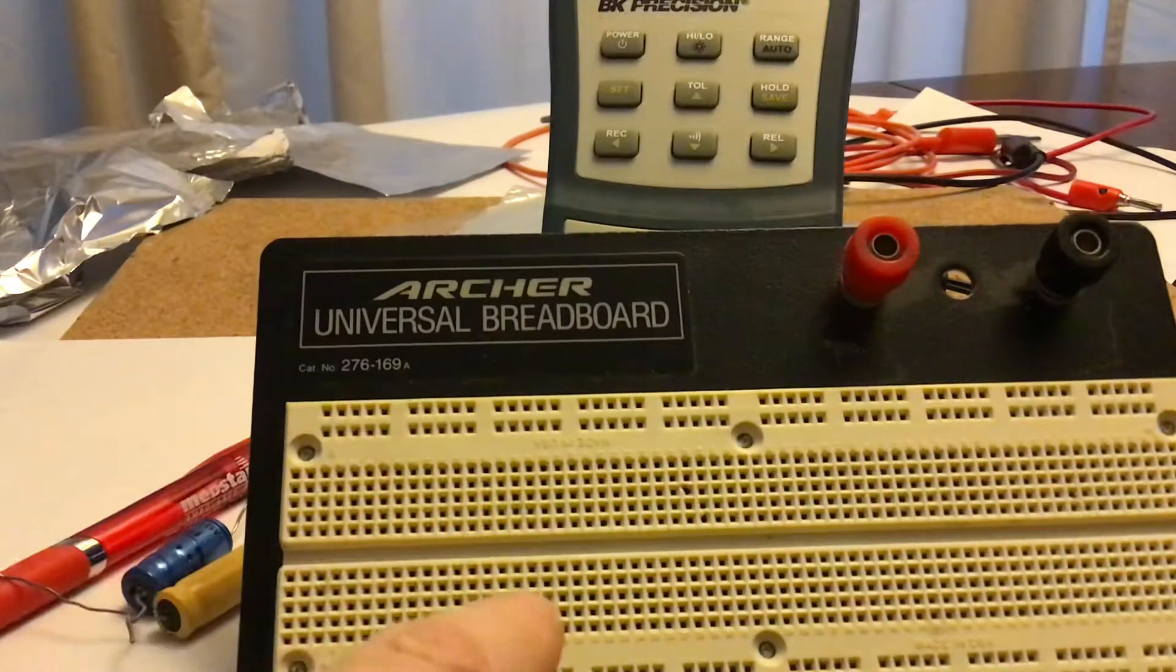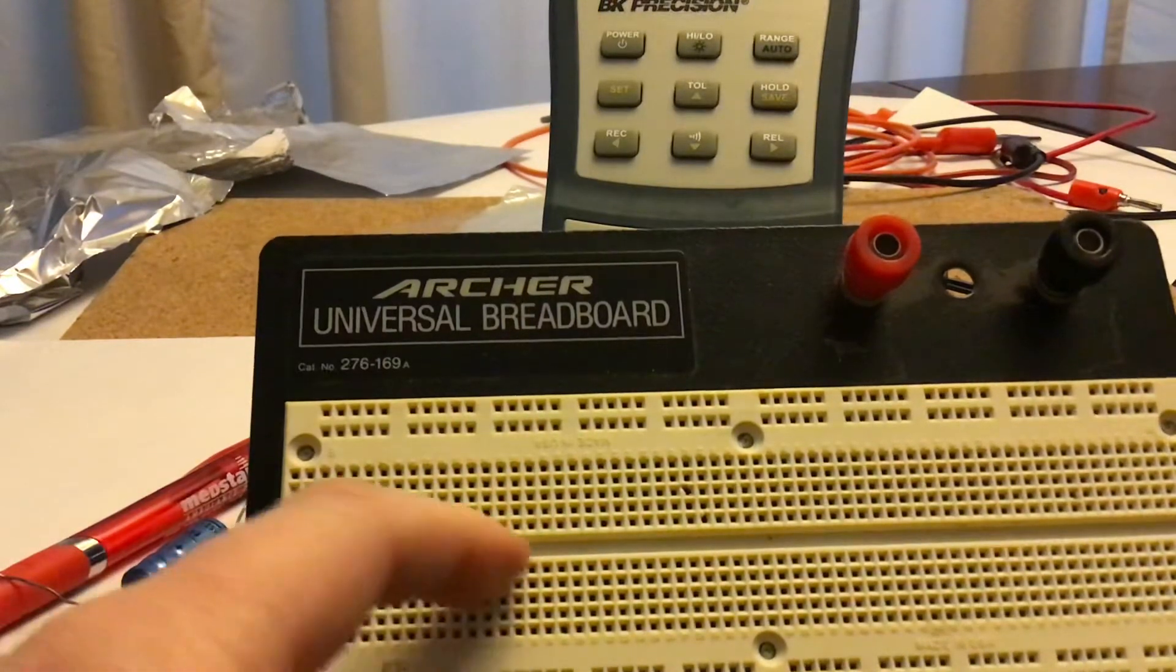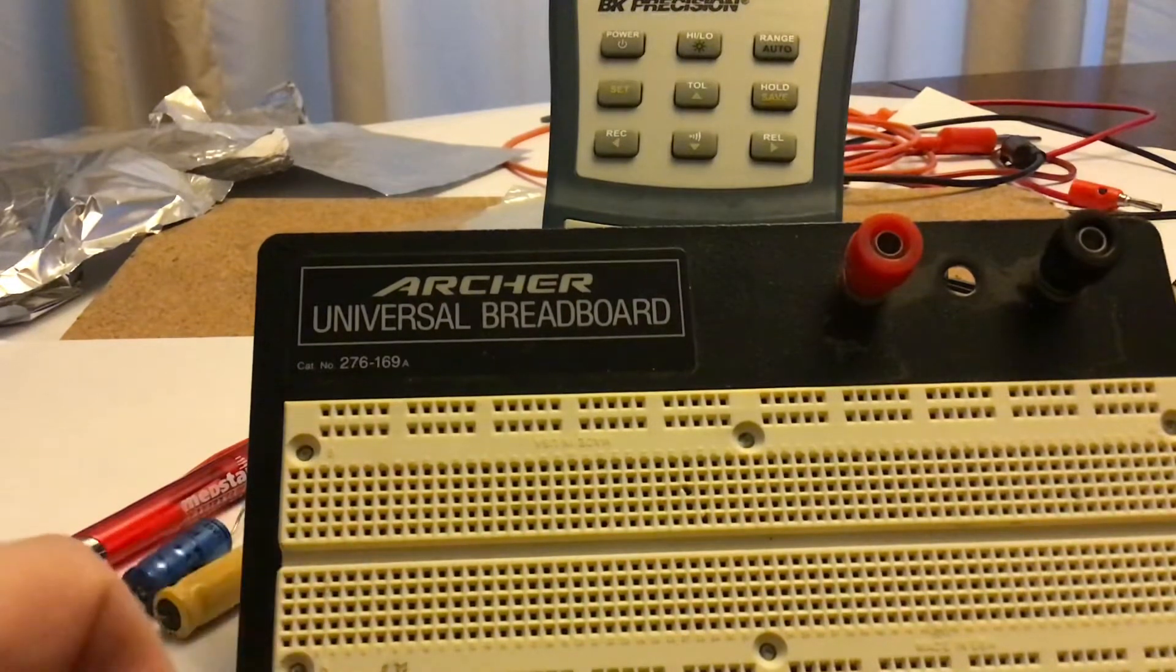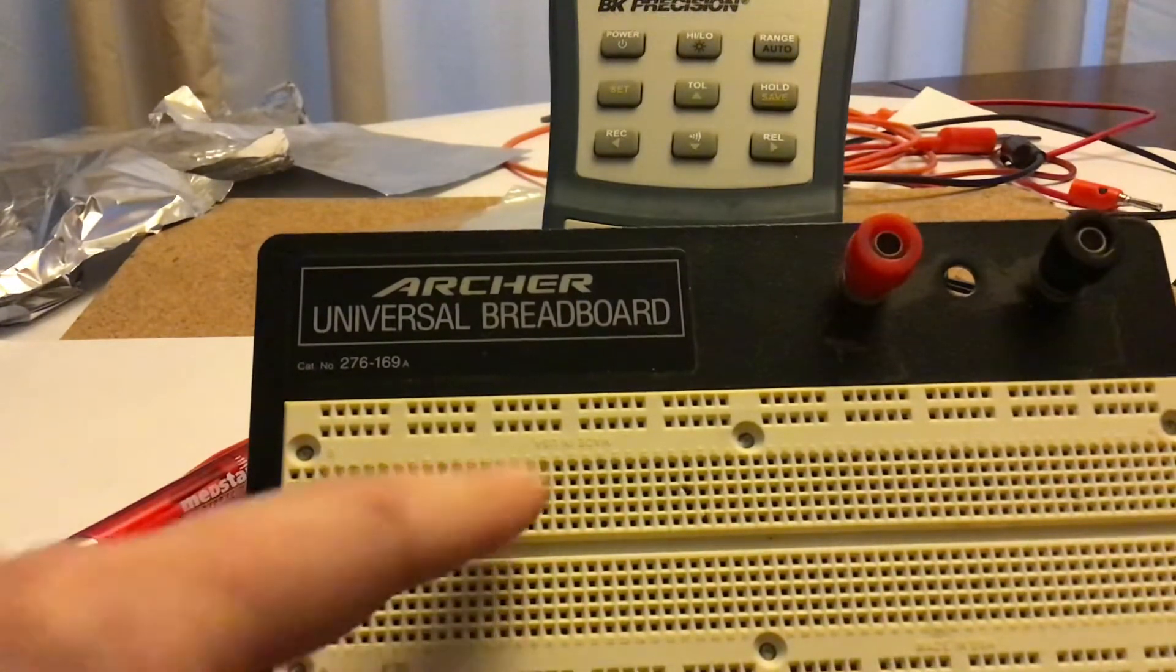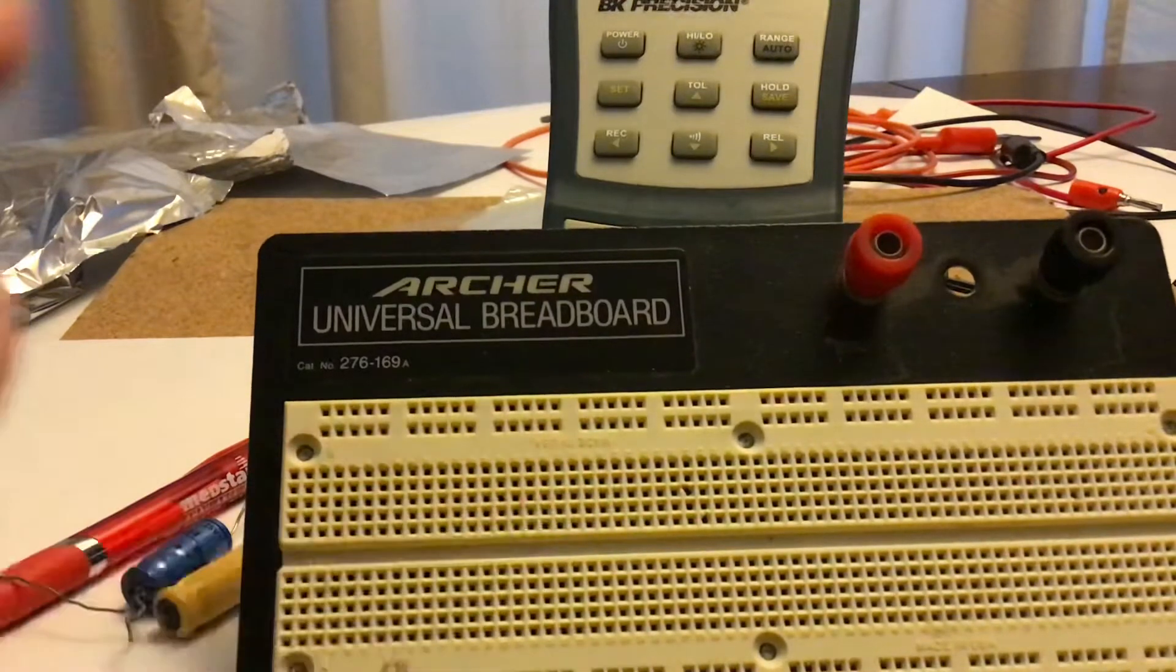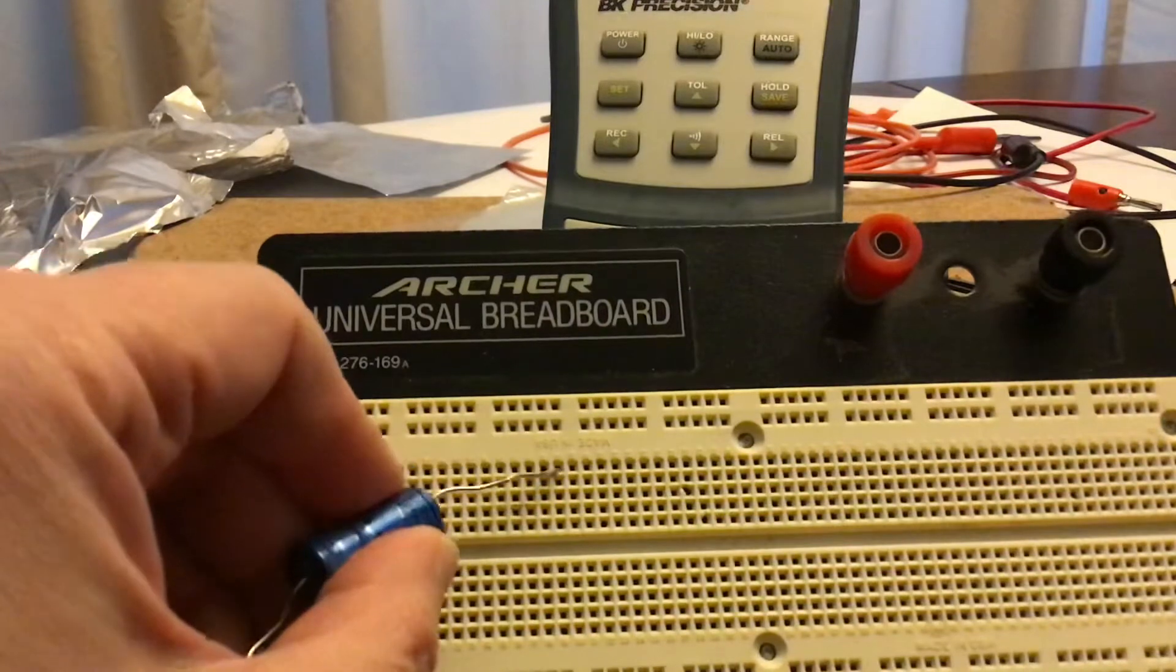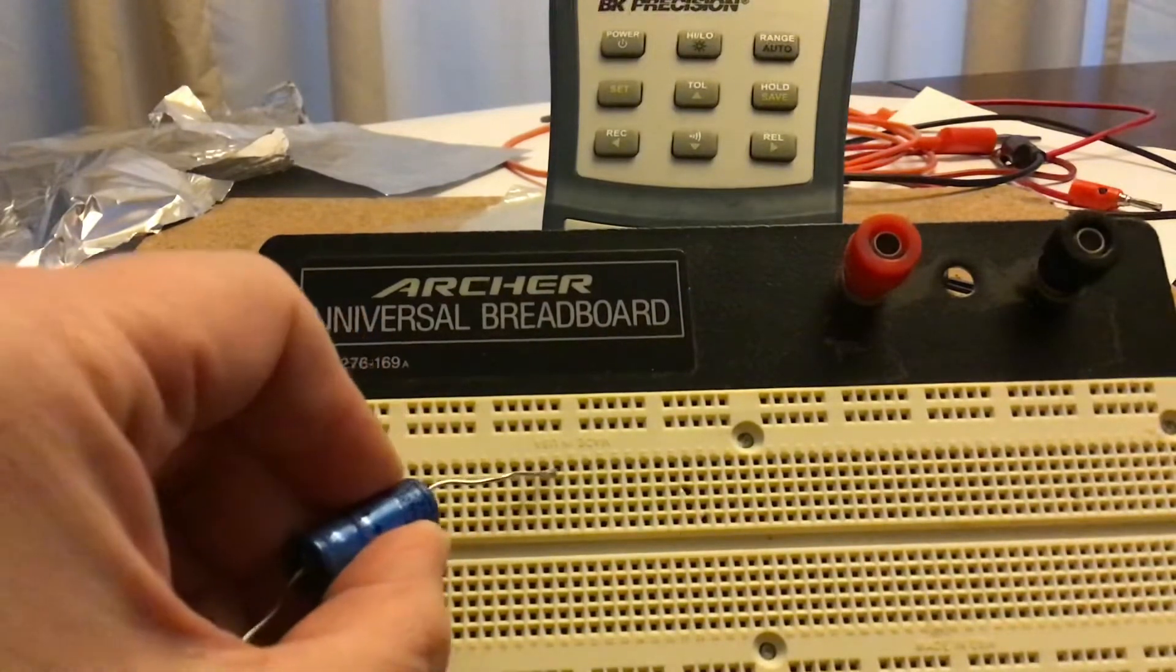Up here you can put IC chips in. This little trough in here is just the right width to put an IC chip in, but we're going to just do work up here. How this works is that all of the columns are electrically connected. The rows are isolated.